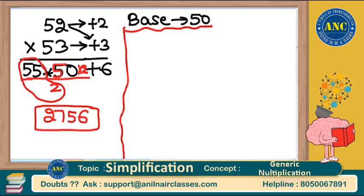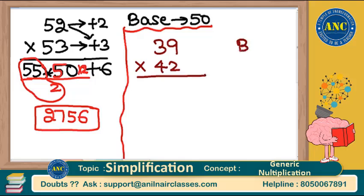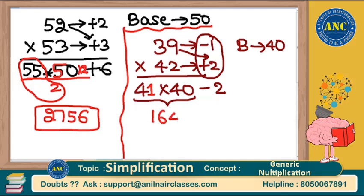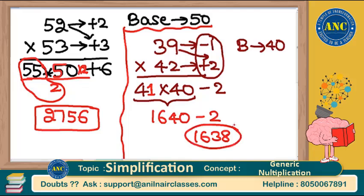One more example: 39 into 42 with base 40. 39 is 1 less than 40, 42 is 2 more than 40. Cross: 39 plus 2 is 41. 41 into 40: 40 into 40 is 1600, plus another 40 is 1640. Minus 1 into plus 2 is minus 2. Final answer is 1638. These are beautiful shortcuts for solving simplification-based questions.